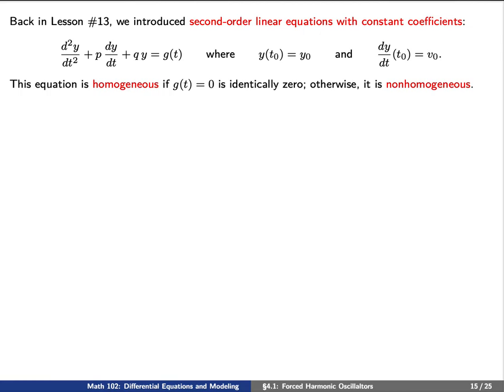Today we're going to talk about forced harmonic oscillators. Back in lesson 13, we introduced the concept of a second-order linear equation with constant coefficients, expressed as an initial value problem: d²y/dt² plus p*(dy/dt) plus q*y equals g(t), where y(t0) equals y0 and dy/dt at t0 equals v0. This equation is homogeneous if g(t) is identically zero; otherwise, we say our equation is non-homogeneous.